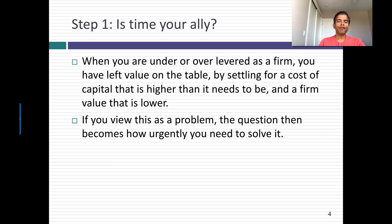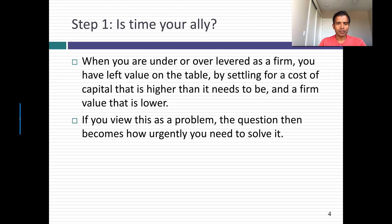What's next? Your first step — the first question you need to answer — is: is time your ally? What I mean by that is how urgent is the problem if your debt ratio is well below or well above what it should be. Your cost of capital is higher than it should be and you're giving up value. So the question is: how quickly do I need to fix this problem? How urgent is the solution needed?